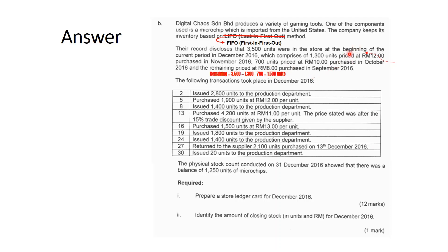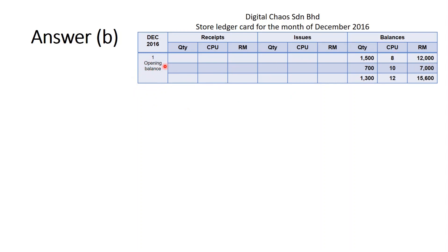This information represents the opening balance. We need to record all opening balance based on first-in. The September 2016 stock is recorded first: 1,500 units at RM8. Next is the October stock of 700 units at RM10. Finally, the November batch of 1,300 units priced at RM12. So this is our opening balance, recorded batch by batch — September first, then October, then November.